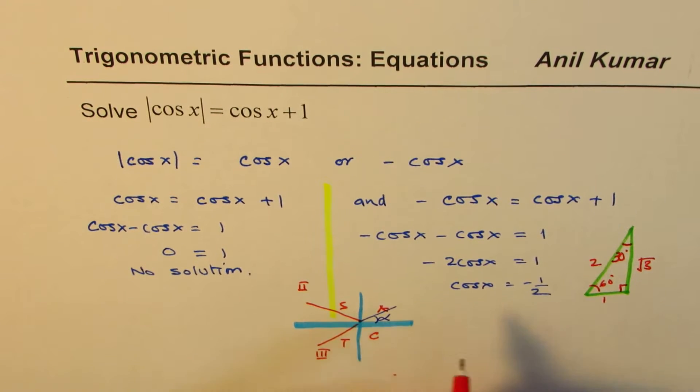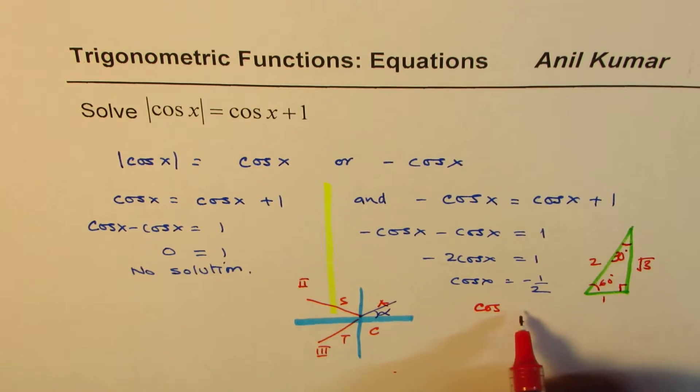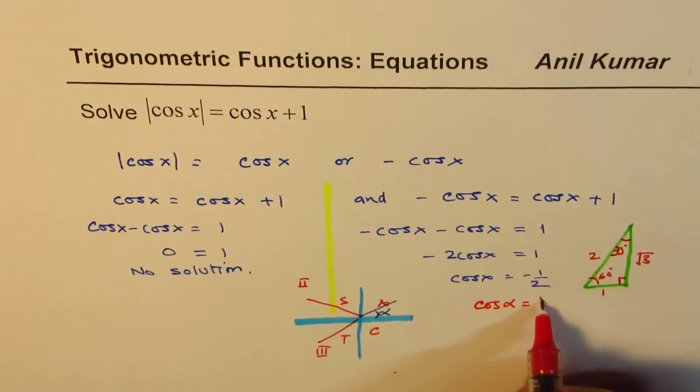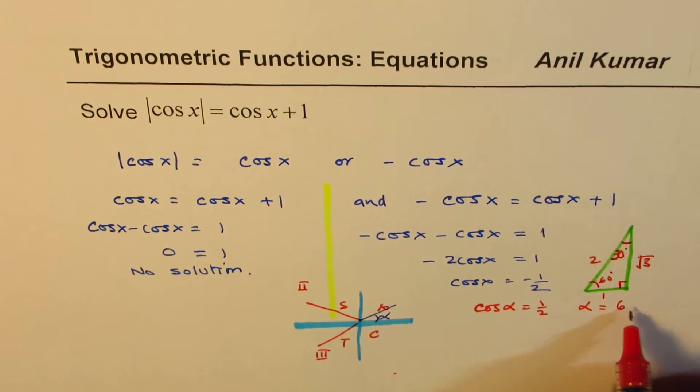So alpha, we could say we can see from here that acute angle cos of alpha equals to half gives you the angle alpha as 60 degrees.